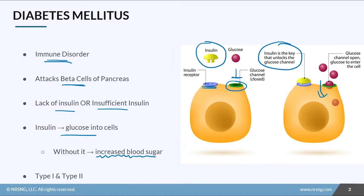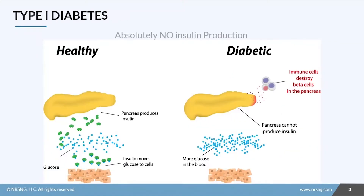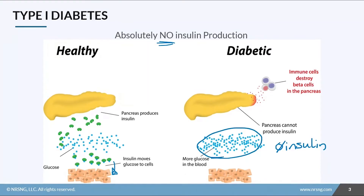There are two types: type 1 and type 2. In type 1 diabetes mellitus, patients have absolutely no insulin production. All of the beta cells in their pancreas have been destroyed — they've completely lost their ability to produce insulin. With zero insulin, all of the glucose is going to end up hanging out in the bloodstream because it can't actually get into the cells. The cells require glucose for energy, so they're going to have to find it another way, and that can create a lot of problems for the patient, as we'll see in the DKA lesson.